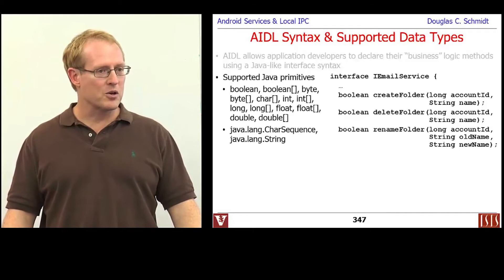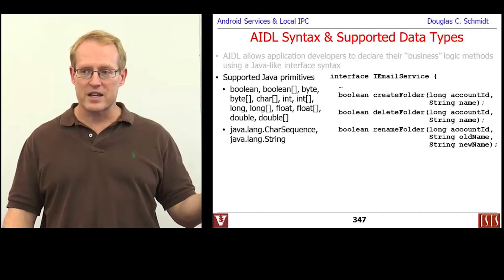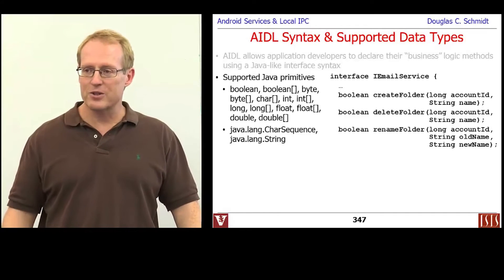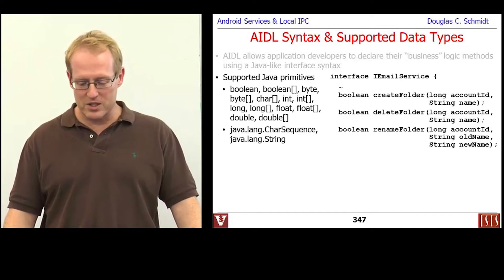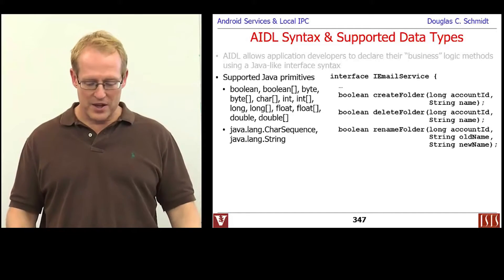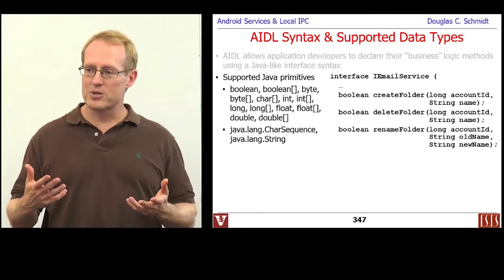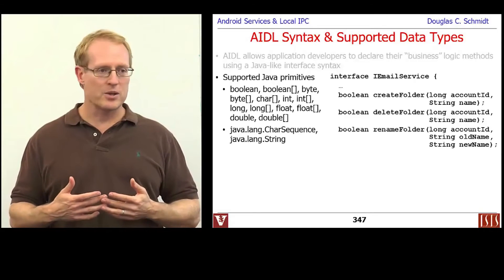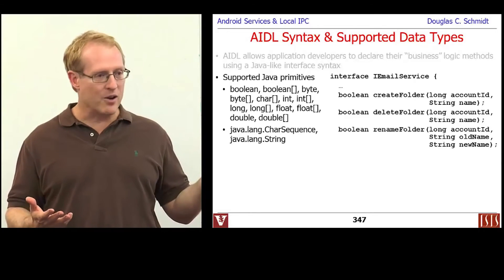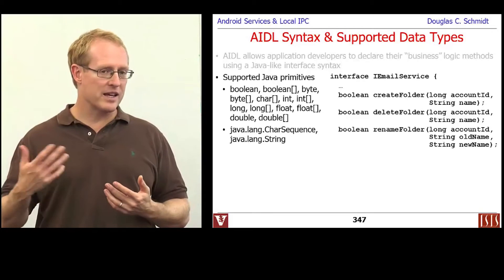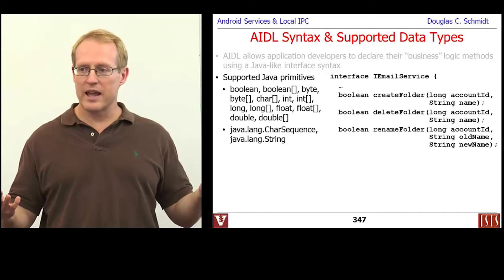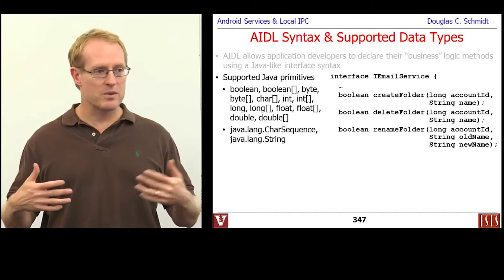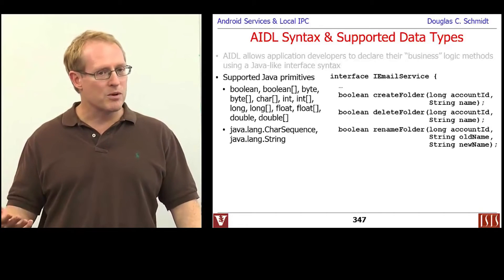You can also return character sequences and strings. Looking around in Android, there's something called the interface for the email service. As you can see, you can create folders, delete folders, rename folders — passing in account IDs and names, with the account ID being a long and the name being a string. Those are examples of passing primitives around, not that much different from normal Java programming.